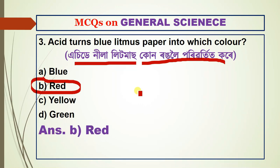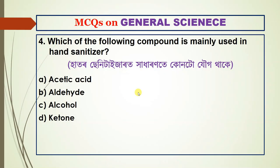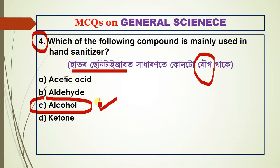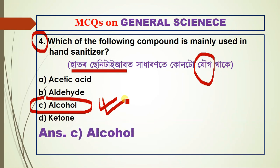Question number four: which of the following compound is mainly used in hand sanitizer? The options include acetic acid, aldehyde, alcohol, and ketone. The answer is alcohol — option C — as the basic component of hand sanitizer.